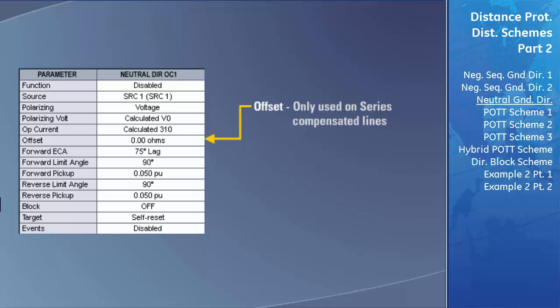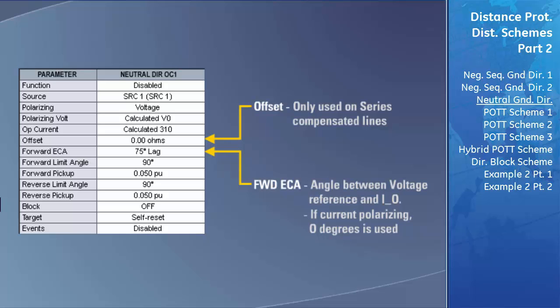The offset setting is only used when the transmission line being protected is a series compensated line, which will not be covered in this course. There is no type setting as there was for the negative sequence directional overcurrent element — the neutral overcurrent element only uses the zero sequence current as the comparison vector. The forward element characteristic angle specifies the expected angle between the reference zero sequence voltage and the polarizing current at the time of a fault if the ground current is flowing in the forward direction. The remainder of the settings are the same as described in the negative sequence directional overcurrent section.